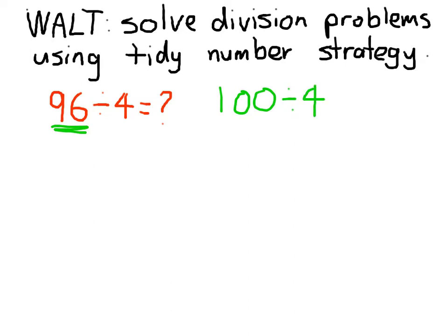100 divided by 4, and then we need to take away 4 divided by 4. You can see that 100 take away 4 equals 96. So 100 divided by 4, take away 4 divided by 4, is the same as 96 divided by 4.